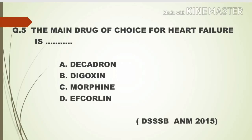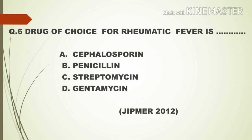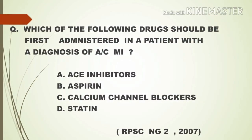Option B, digoxin, is the right answer. The next question: the drug of choice for rheumatic fever — options are a) cephalosporin, b) penicillin, c) streptomycin, d) gentamicin. Option B, penicillin, is the right answer.